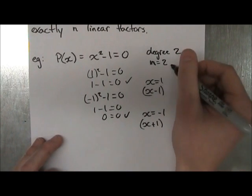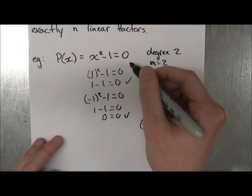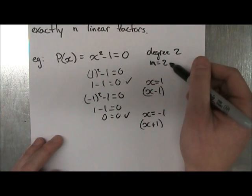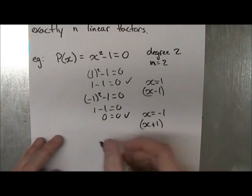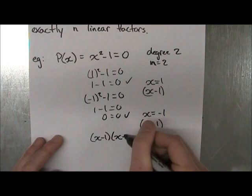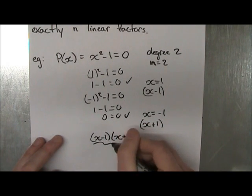And x minus or plus 1 is a factor as well. So as you can see, our assumption, we assumed that this had two linear factors because the degree was 2 and n equals 2. So this must have two linear factors, and we found them. x minus 1 and x plus 1 are two linear factors.